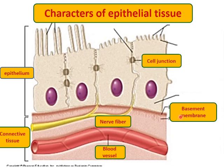The characteristics of epithelial tissue: first, as seen in this diagram, epithelial cells show minimal intercellular substance — the substance present between the cells. The cells are connected to each other by structures known as cell junctions. Epithelial cells rest on a sheet-like structure known as the basement membrane.